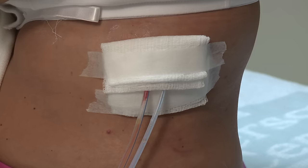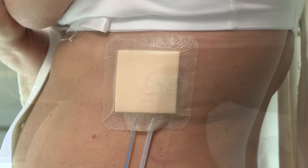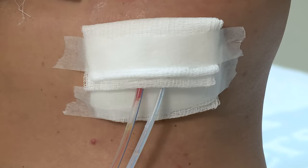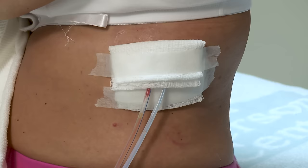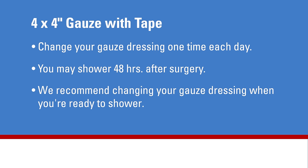There are many ways to dress and care for the drain insertion site, and different types of dressings. Depending on what your surgeon has chosen, care of the area will vary — please follow the instructions specific to your type of dressing. Four by four inch gauze and tape dressings were applied to your skin over the drain insertion site at the time of surgery. You need to change your gauze dressing once each day, and we recommend doing so when you shower, 48 hours after surgery.